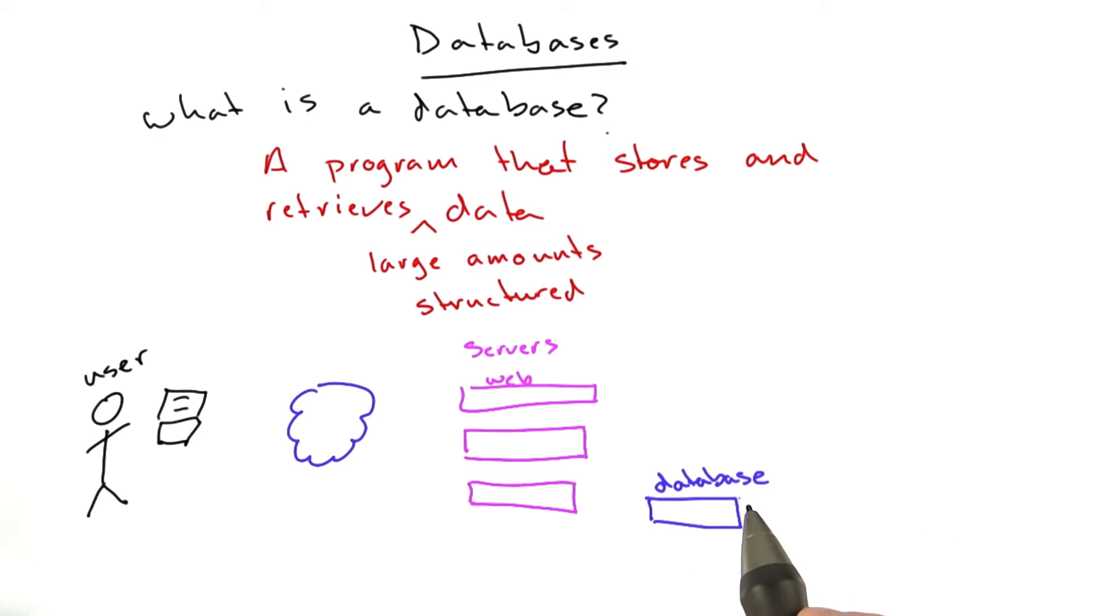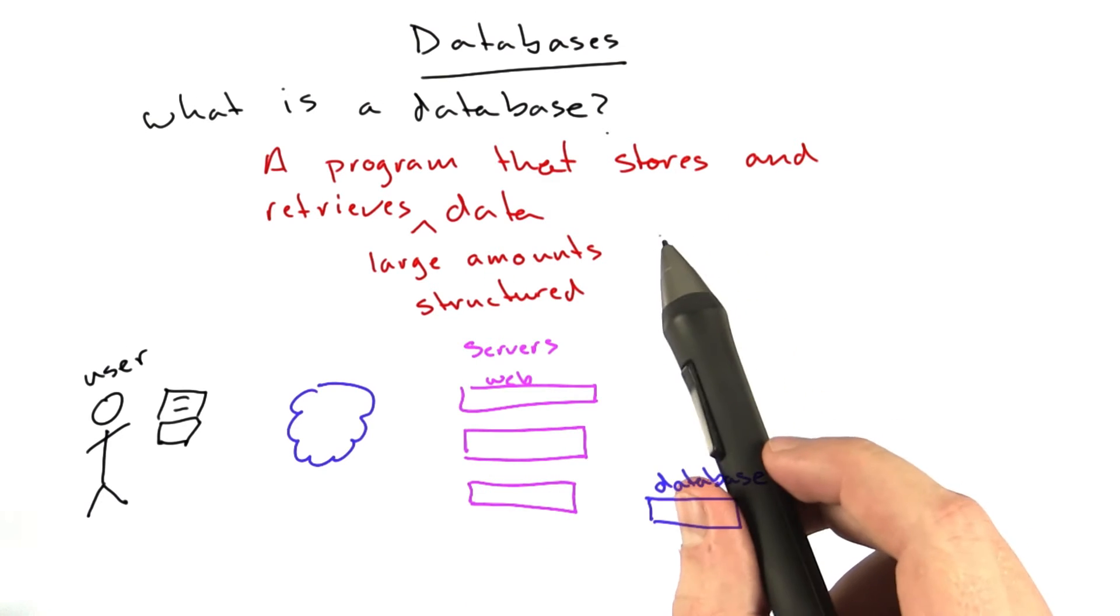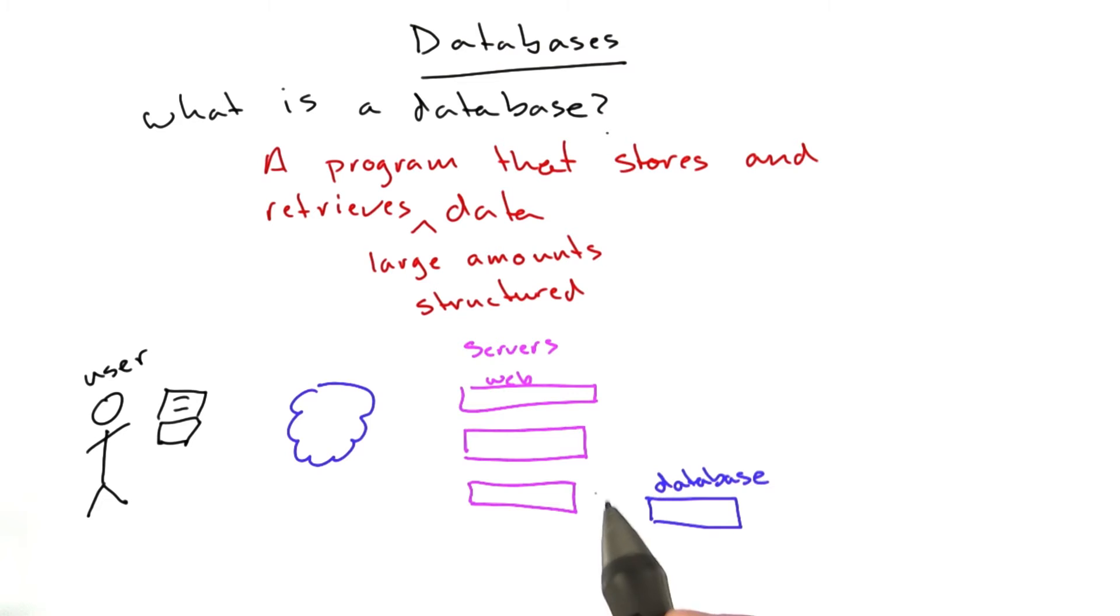So a database can refer to a program that's storing and retrieving the data, or it can refer to the machine running this program, or it can refer to a system of machines running this program operating together. And just like a web server may refer to just the program, the web server, or the physical machine, or the group of machines all working together to host your web application.